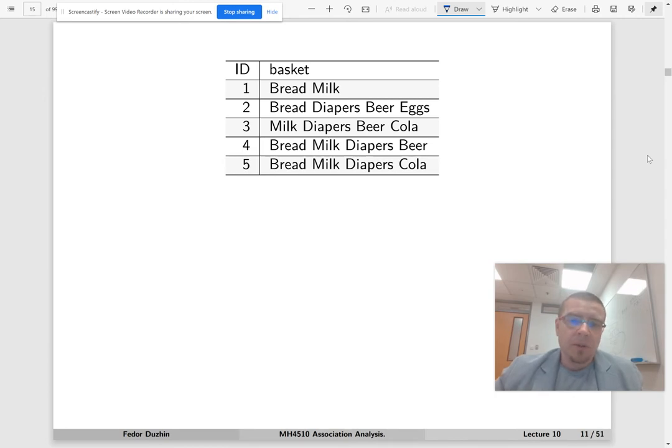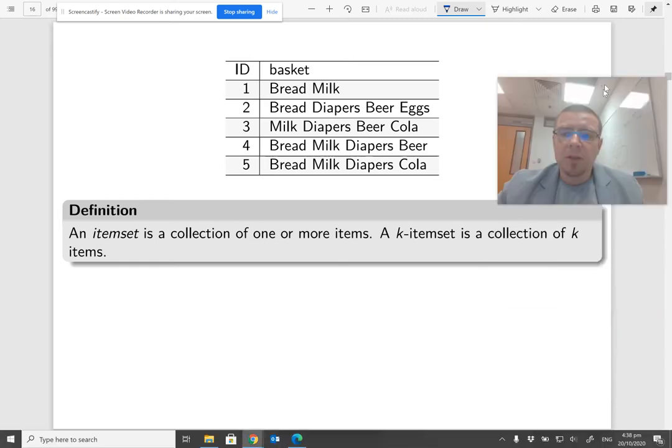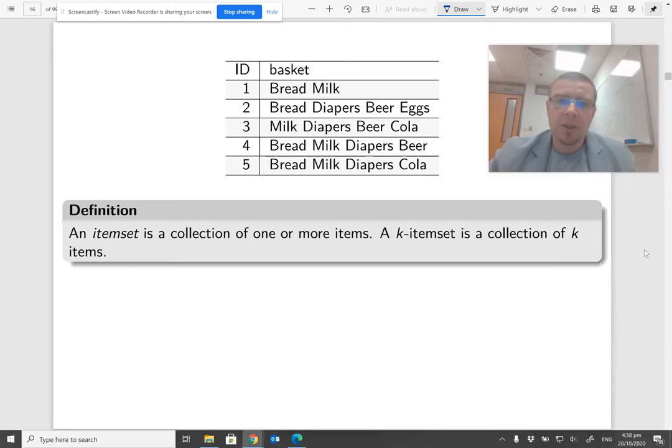Here is our data set again. Now, an itemset is a collection of one or more items. For example, beer and eggs is an itemset.